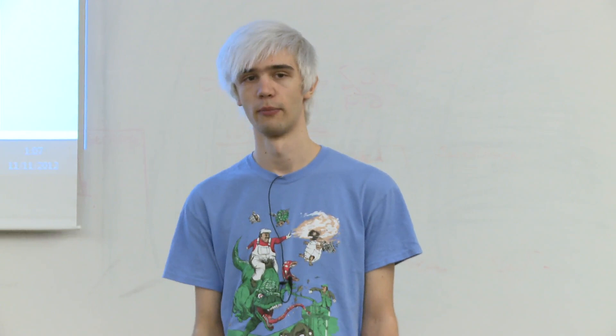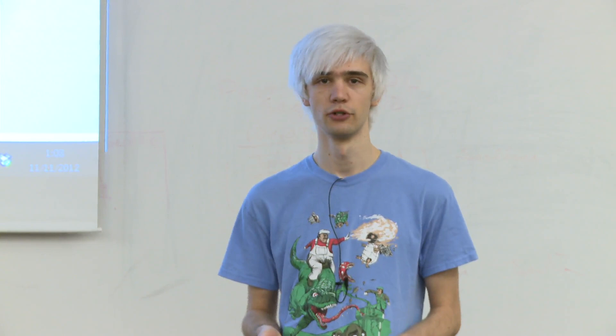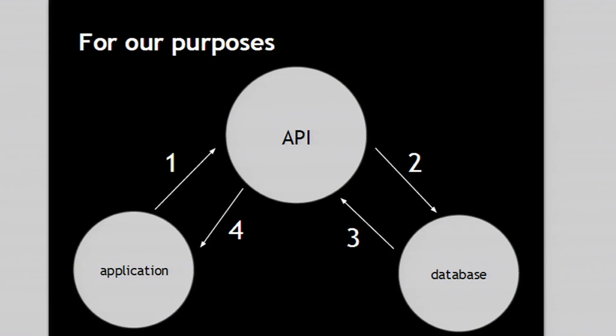There is one main way that data is usually sent and received, which is JSON, or JavaScript Object Notation. How you send the request to the API can vary — usually it involves making some sort of network request, accessing a URL that tells the API exactly what you want — but the data is almost always sent back in JSON.